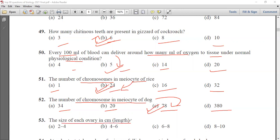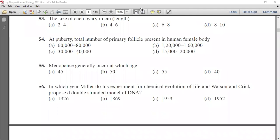The size of each ovary in centimeter is 2 to 4, 4 to 6, 6 to 8 or 8 to 10. Size of ovary is 2 to 4 cm. At puberty the total number of primary follicles in human female body: 60,000 to 80,000, 120,000 to 160,000, 30,000 to 40,000 or 15,000 to 20,000. At puberty the primary follicles present are 120,000 to 160,000. Menopause generally occurs at which age? 45, 50, 55 or 40. Menopause occurs at 55. Menopause is the period at which the menstrual cycle stops, usually at 55 years of age.